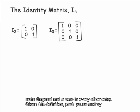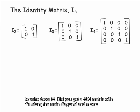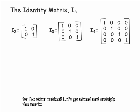Given this definition, push pause and try to write down I sub 4. Did you get a 4 by 4 matrix with 1s along the main diagonal and a 0 for the other entries?